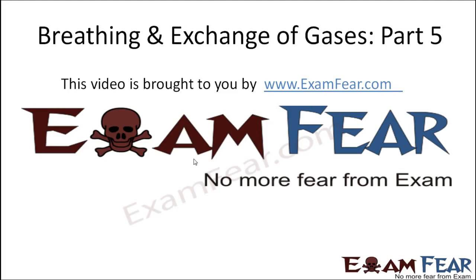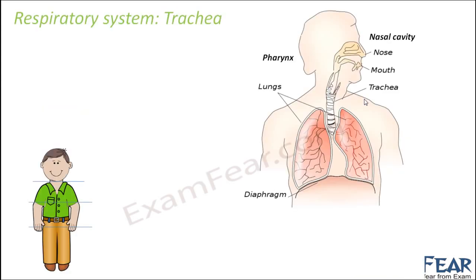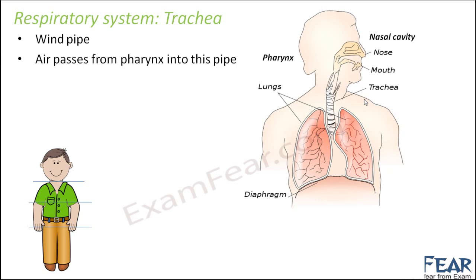This video on breathing and exchange of gases part 5 is brought to you by examfear.com. Let us look at the next part after the pharynx, that is the trachea, which is often known as the wind pipe — just like the esophagus is called the food pipe, the trachea is called the wind pipe because it carries air. Air passes from the pharynx into this pipe.